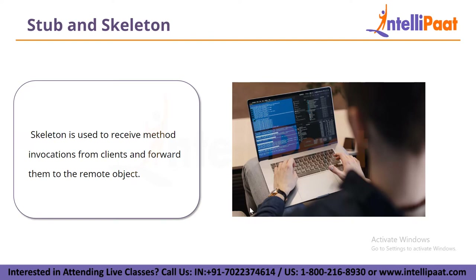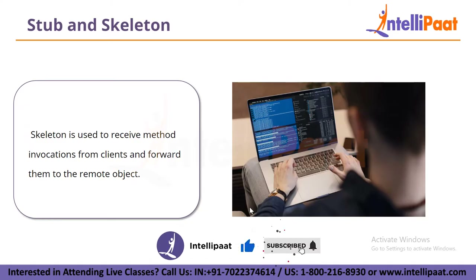The stub and skeleton work together to provide a transparent communication mechanism between client and server. The client invokes a method on the stub as if it were a local object, and the stub takes care of the communication details with the remote object. Similarly, the skeleton receives the method invocations from the client and forwards them to the remote object, which processes the requests and returns the result to the client. The stub and skeleton are generated automatically by the RMI compiler, which greatly simplifies the development process.